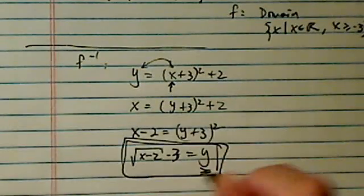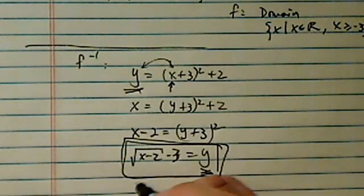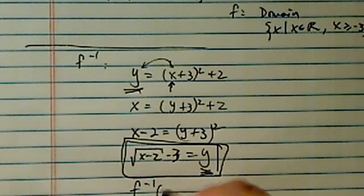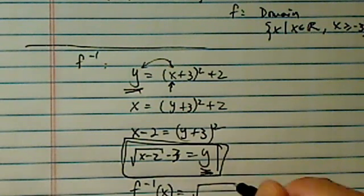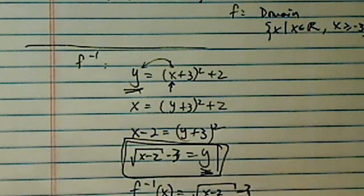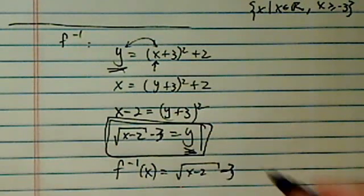This one, this y, is not the same as this y. So basically, I'm saying inverse of x is equal to √(x-2) - 3. Okay, this is my inverse function.